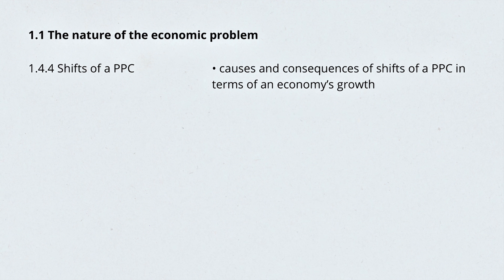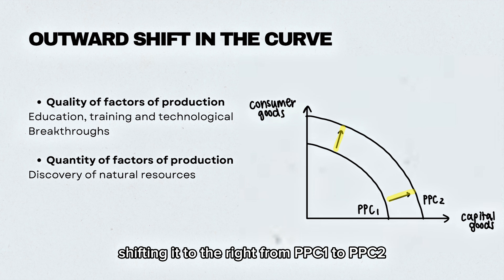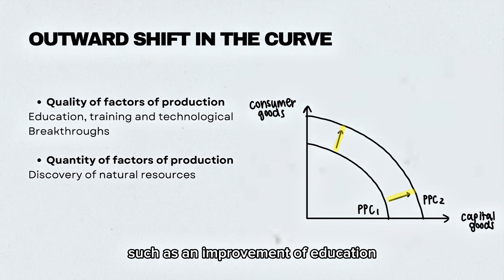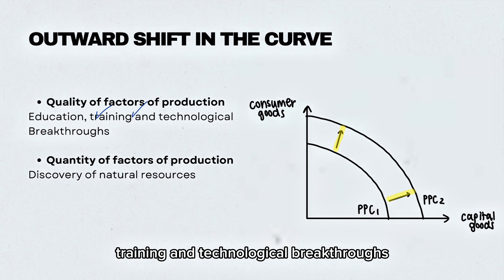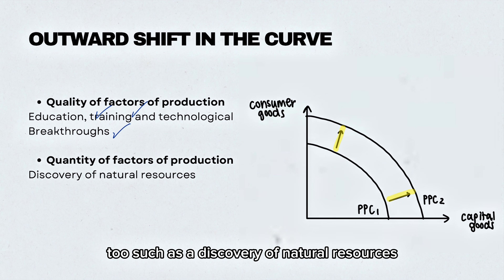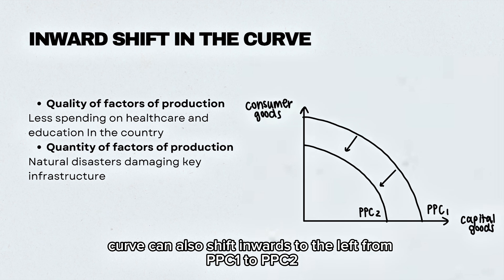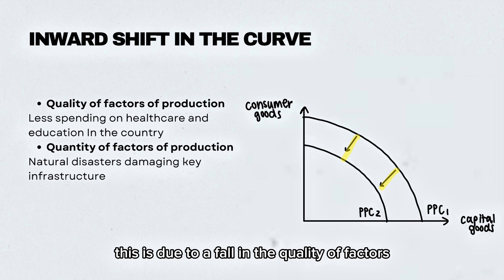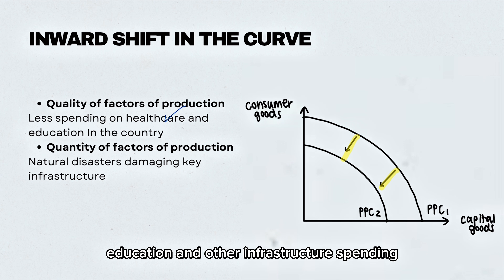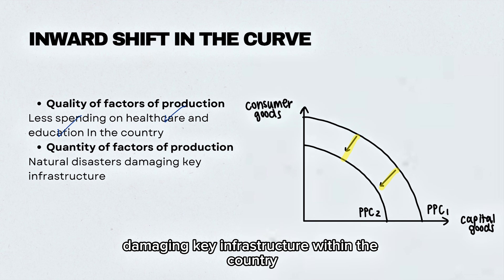Moving on to the shifts of the PPC. There can be an outward shift of the curve, shifting to the right from PPC1 to PPC2, due to improvements in the quality of factors of production such as better education, training, and technological breakthroughs. Quantity can also increase through a discovery of natural resources like an oil reserve. The PPC can also shift inwards to the left, due to a fall in quality of factors of production such as less spending on healthcare and education, or a reduction in quantity from natural disasters damaging key infrastructure.